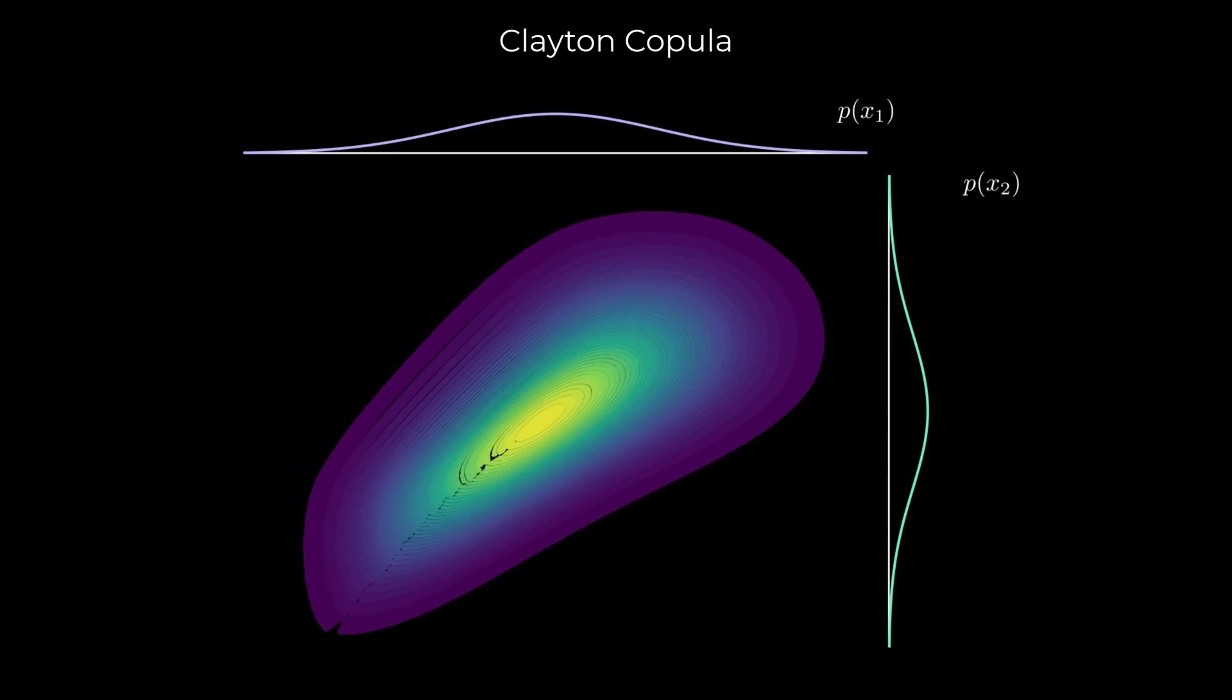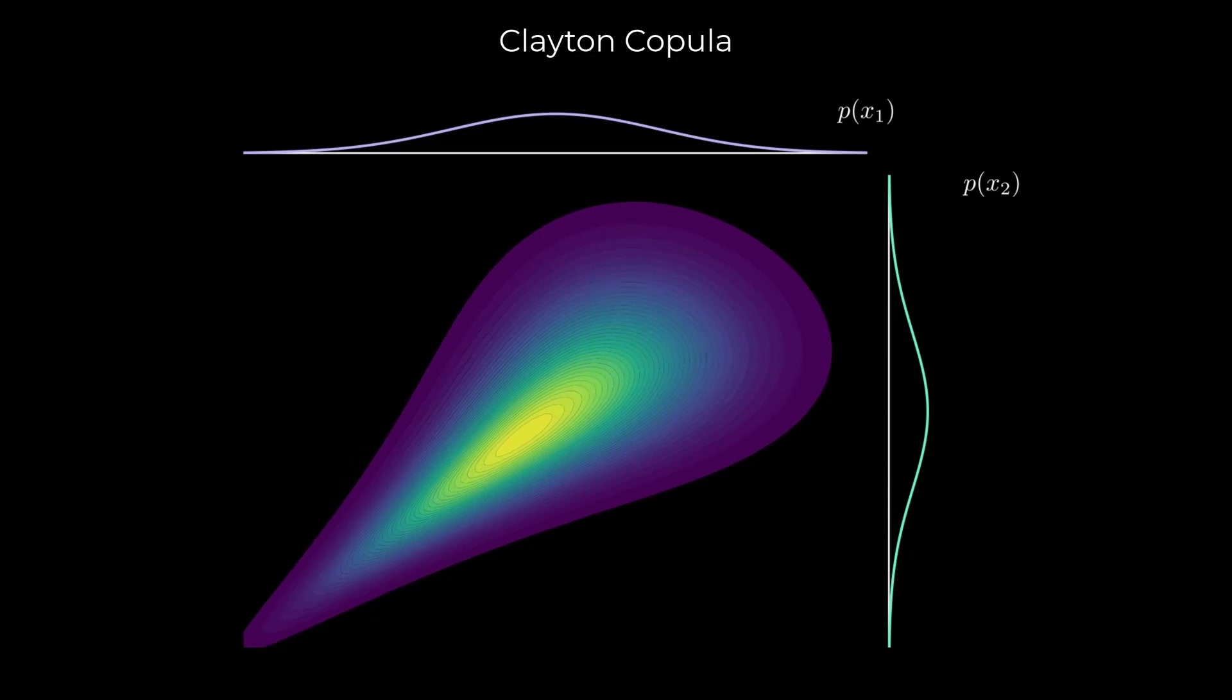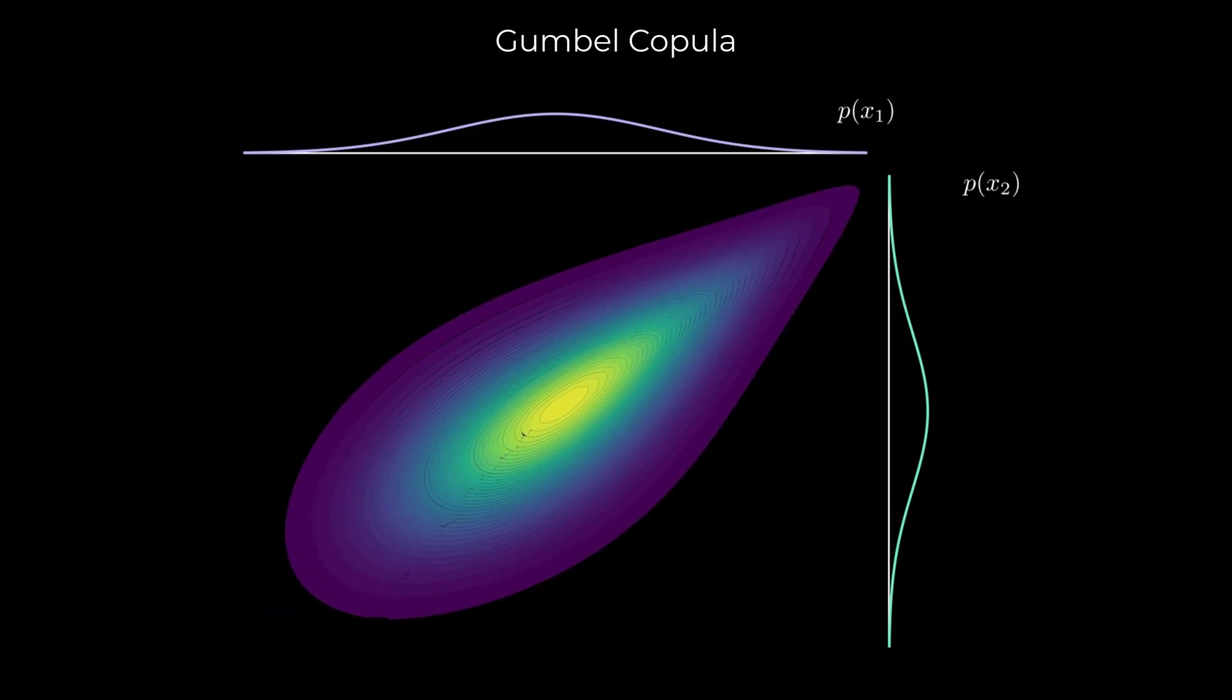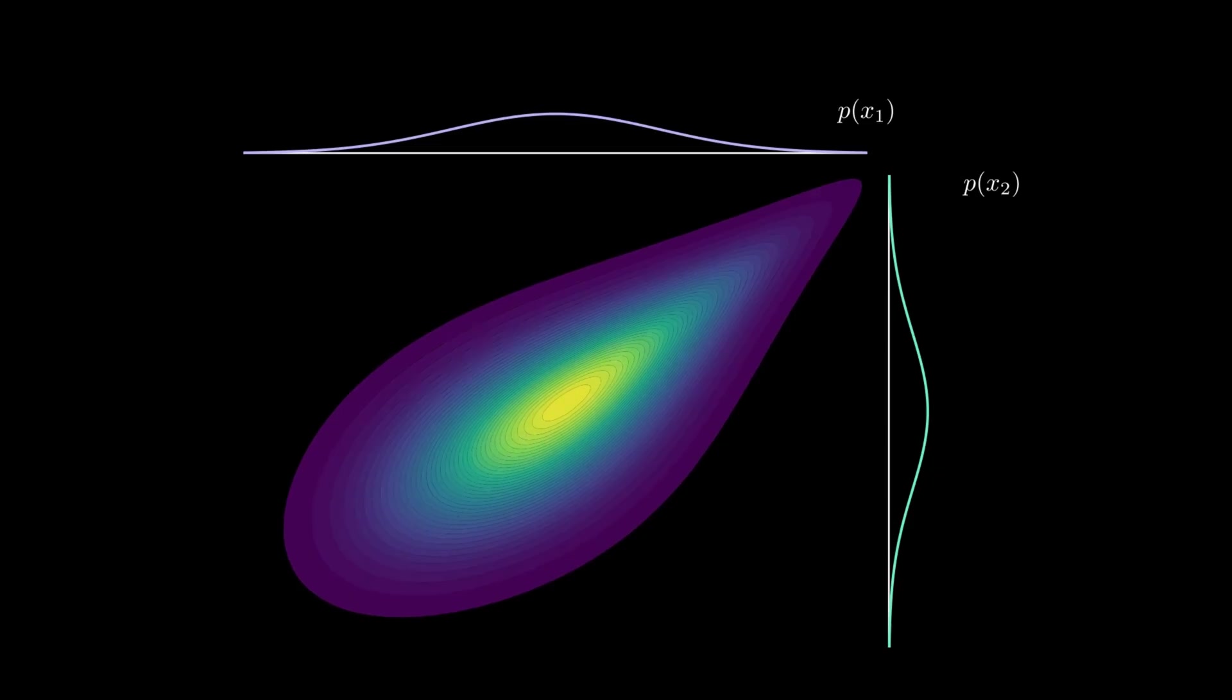Next we have the Clayton copula, that emphasizes lower tail dependence, capturing stronger association when both variables take small values. And finally, the Gumbel copula highlights upper tail dependence. The variables move together more when both are large.